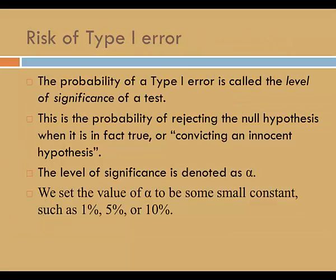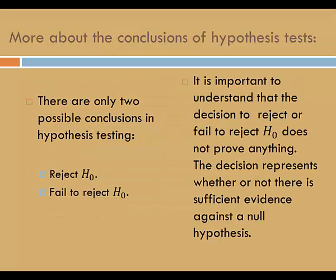The probability of a Type 1 error is called the level of significance of a test. This is the probability of rejecting the null hypothesis when it is in fact true — in terms of a trial, convicting an innocent hypothesis. The level of significance is denoted as alpha. We set the value of alpha to be some small constant, such as 1%, 5%, or 10%. In hypothesis testing, there are two possible conclusions: we either reject the null hypothesis or fail to reject the null hypothesis. It is important to understand that this decision does not prove anything — it represents whether or not there is sufficient evidence against the null hypothesis.